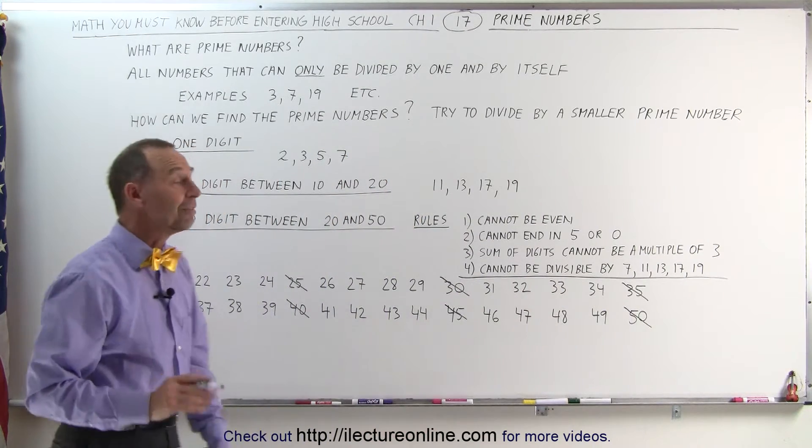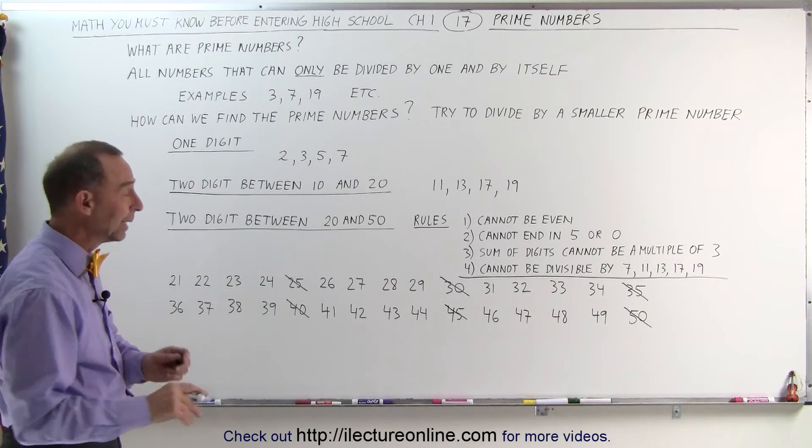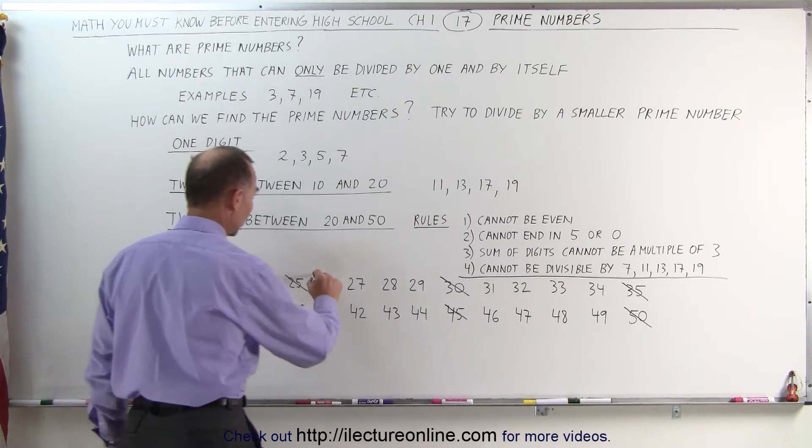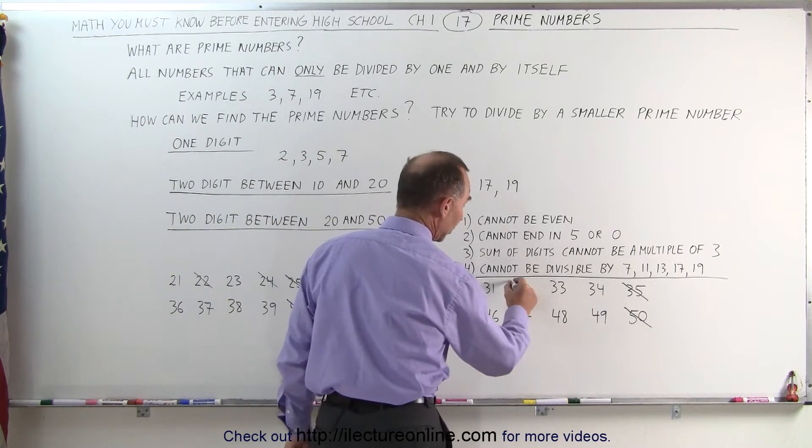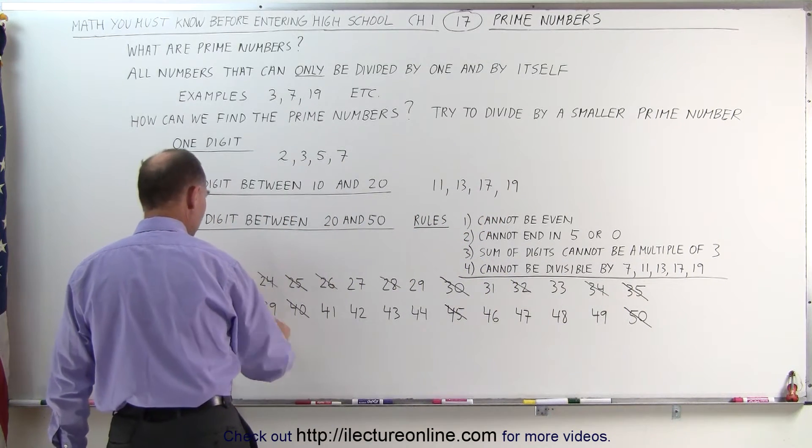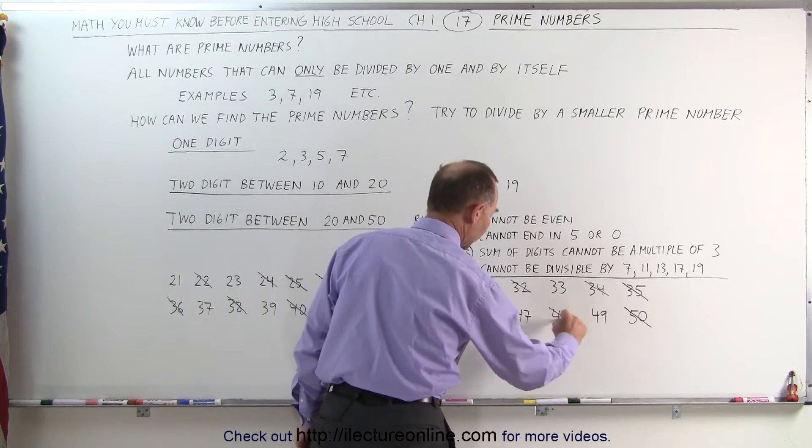Now let's go for all the even ones. If the number is even, that means it's divisible by 2, it cannot be a prime number. So we can get rid of all the even numbers. 22, 24, 26, 28, 30 would have been caught under that rule as well. 32, 34, 36, 38, 42, 44, 46 and 48.